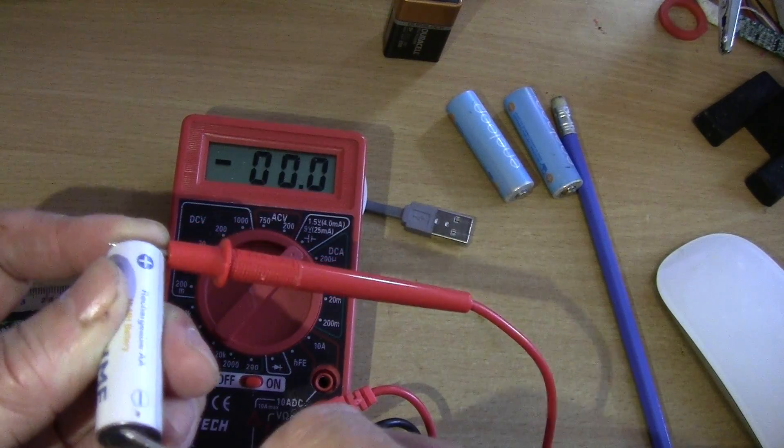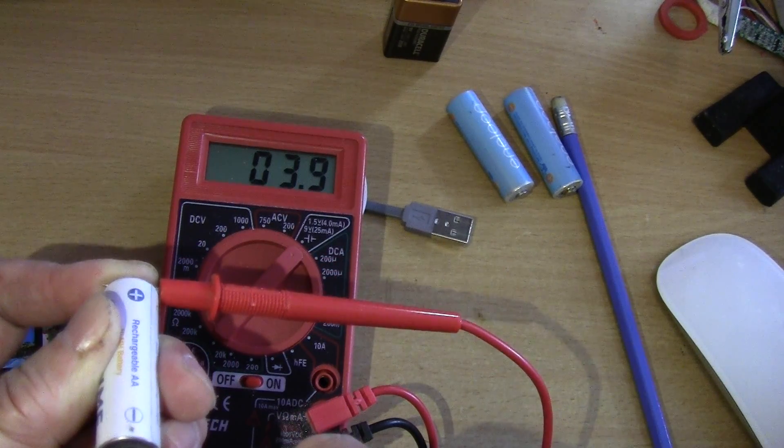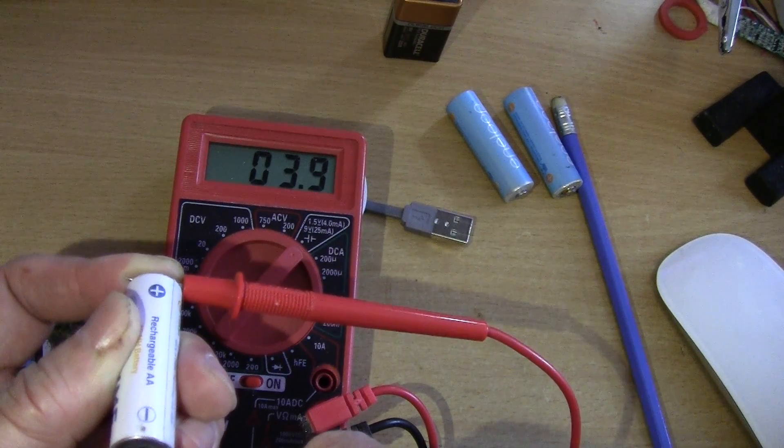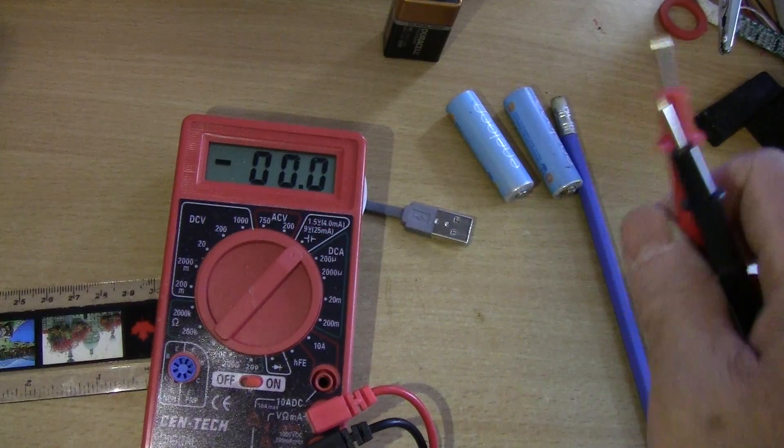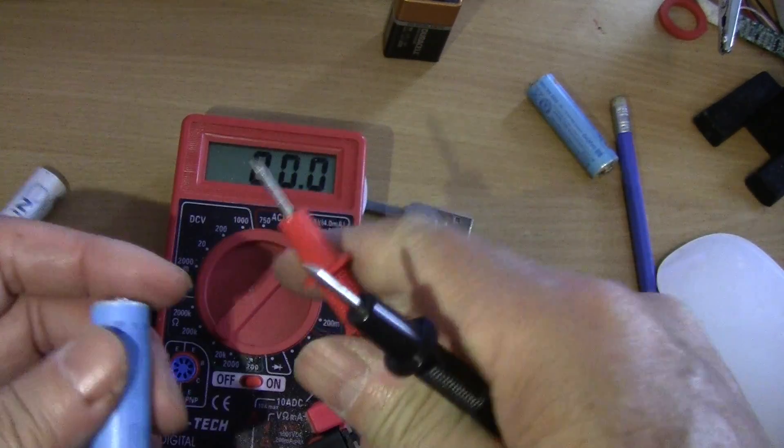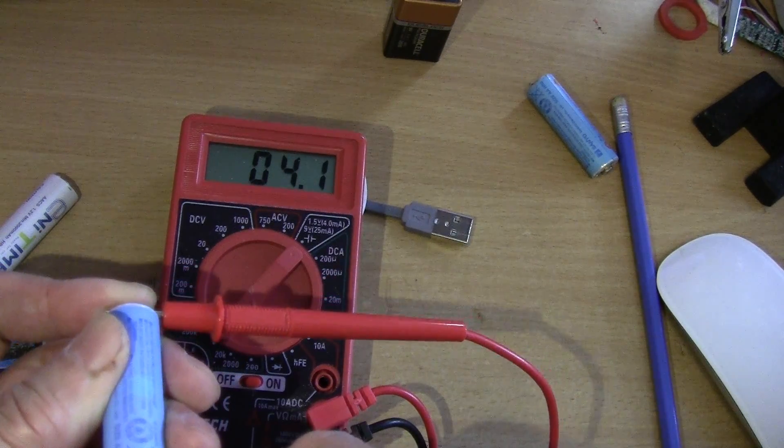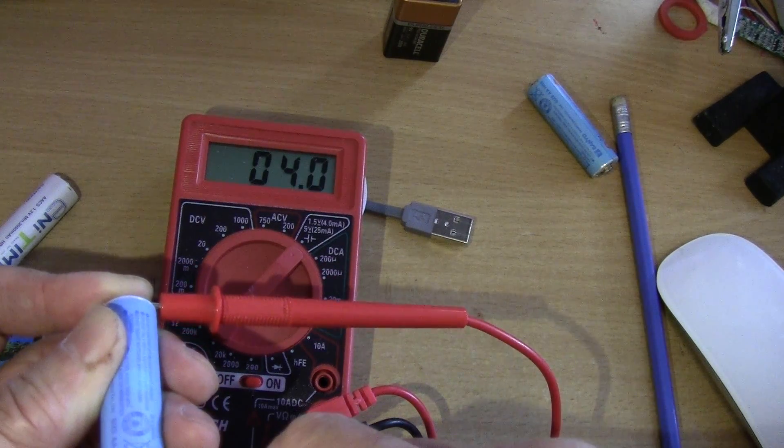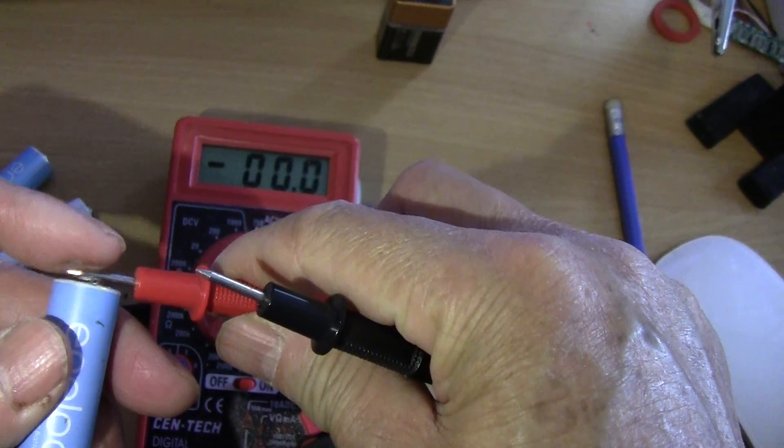This one is a nickel metal hydride battery - just under 4, or I guess 4. And this is an Eneloop battery that I just charged up - 4.1, which is good. Another one that I charged up...